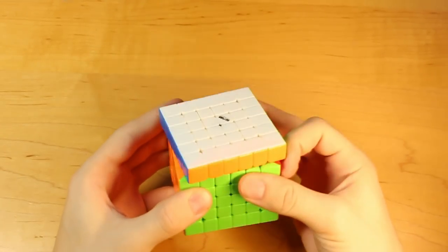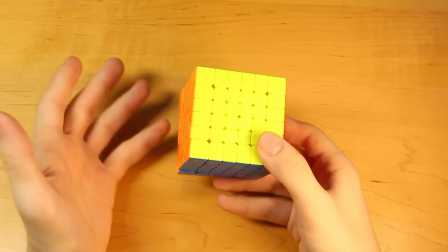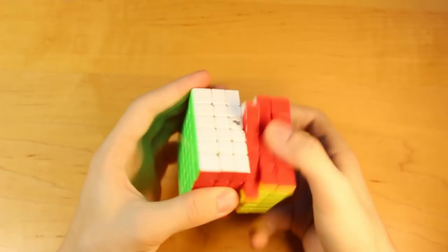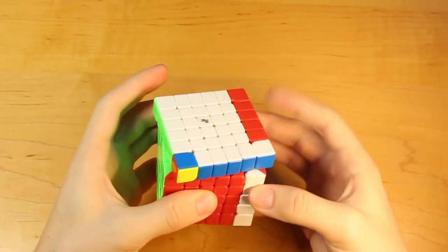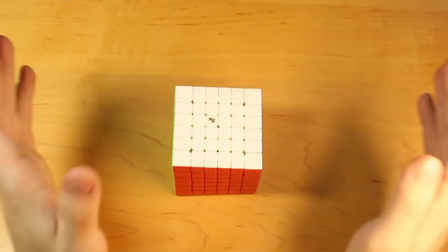This is the Wuhua that was my previous main. And it's super sluggish. It's painful to turn this. And my current main. The YJ MGC 6x6. Magnetic. It is wonderful. I love it. I don't really do 6x6 that much. So I'm pretty sure this is going to be fine for me for a long time.